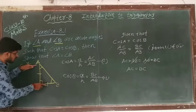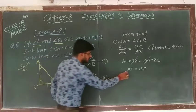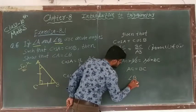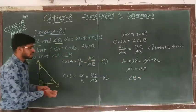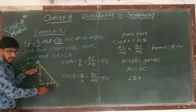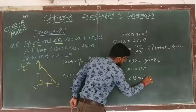Okay, opposite angle of AC is B. So we can write angle B is equal to opposite angle of BC is angle A.